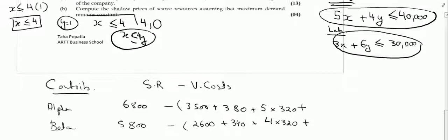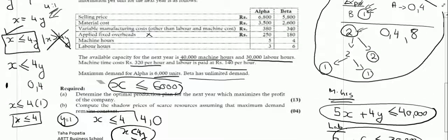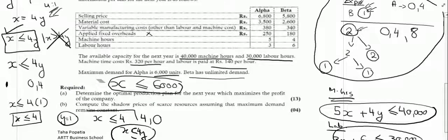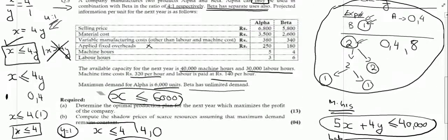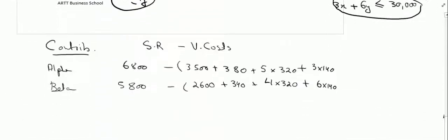Plus, we are given with labor hours. Alpha uses 3 labor hours and beta uses 6 labor hours. The cost of labor hours is 140 rupees provided below the table. And therefore, the next cost will be 3 into 140 and 6 into 140. There is no other variable cost left behind. So we will subtract all the variable cost and calculate the contribution per units.